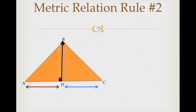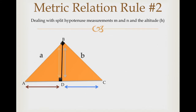Now that you're great with the first rule, let's look at the second rule. The second rule is, to be honest, the most common rule you will see when dealing with metric relations. The sides it deals with are the hypotenuse segments and the altitude. The rule is: M over H is equal to H over N — one side of the hypotenuse over the altitude equals the altitude over the other side of the hypotenuse. It's honestly the easiest proportion of all.